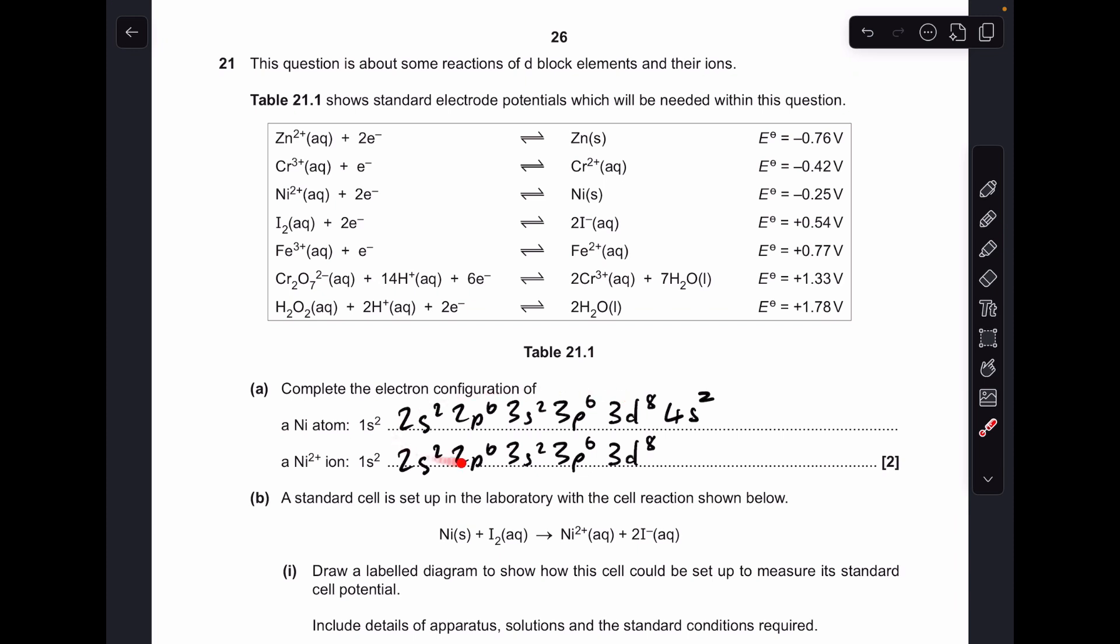Okay, so I'll make a start. There's the electron configurations for the nickel atom and the nickel 2 plus ion. The exam board doesn't mind which way around these go, but just remember when you form the ion of a transition element, you need to lose the 4s electrons first.